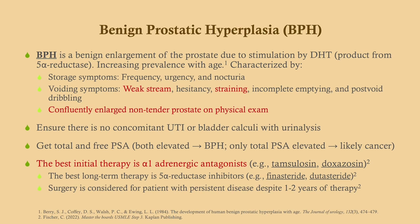BPH — a painless, confluent enlargement — occurs in older men and is very common. It ultimately comes down to stimulation by dihydrotestosterone (DHT), a byproduct of testosterone. Testosterone is converted by the enzyme 5-alpha reductase to DHT, which is very potent. DHT causes not only BPH but also male pattern baldness, so a bald patient is actually at higher risk of developing BPH later in life.